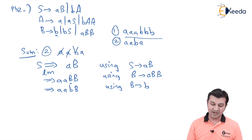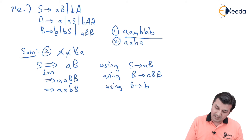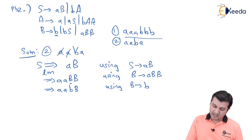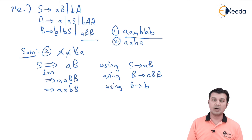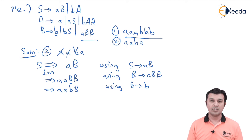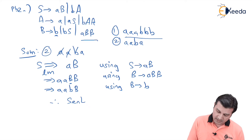Now I have a capital B left which should give me a single small a to get the required string. But when I look at the productions of B, I see B gives small b, or BS, or ABB - there is no way I can derive a small a out of it. Even if I use B gives ABB, my B has to again give small b, thereby increasing the length of the string. So I conclude that this string is not derivable. Therefore the string or sentence is not derivable.